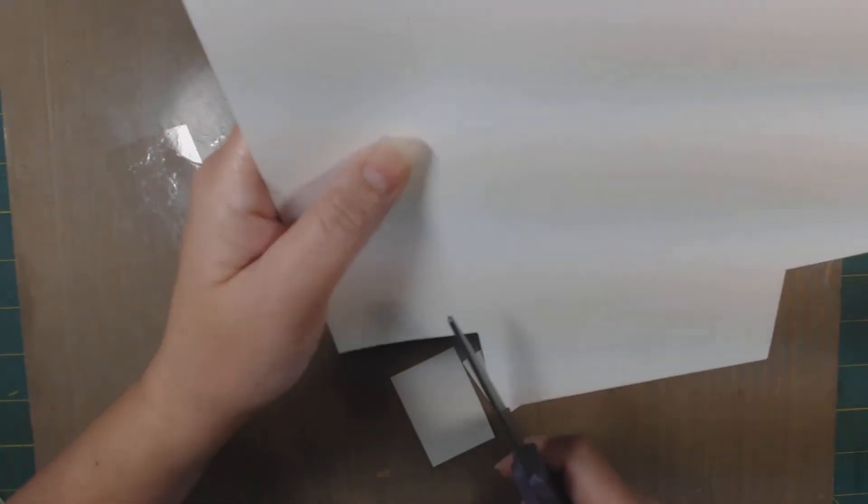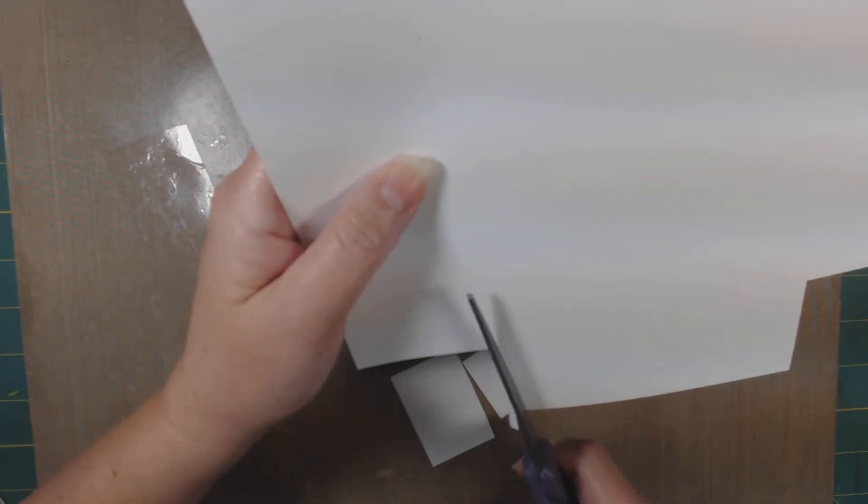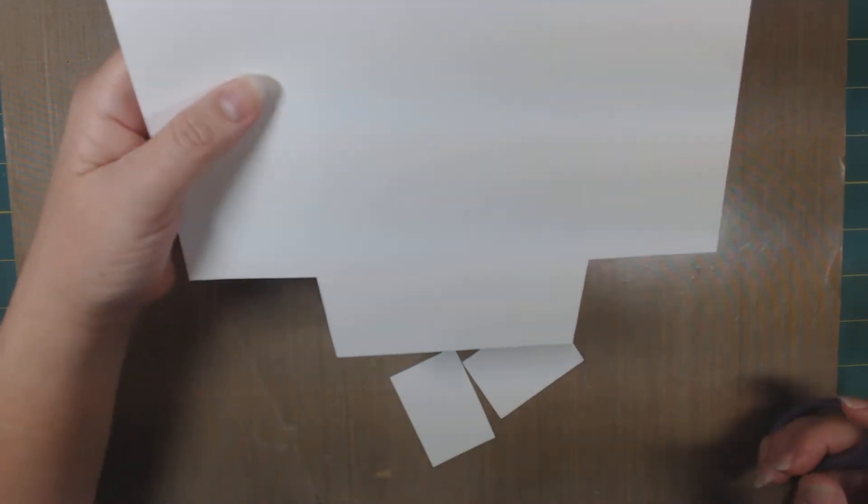It doesn't really take too long, but I really don't know how to pause my camera without erasing anything. Okay, so we got those two pieces cut out. Now we're going to miter these corners in just a little bit on either side.